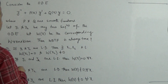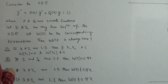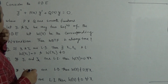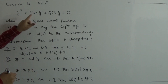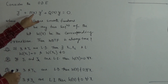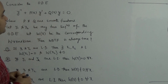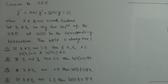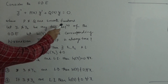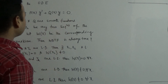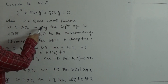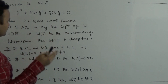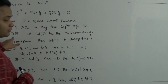This is a question asked in NET 2018. The question is: consider the ODE y'' + p(x)y' + q(x)y = 0, where p and q are smooth functions. Let y1 and y2 be any two solutions of the ODE.